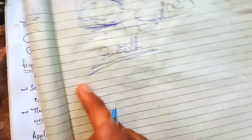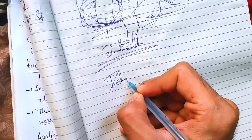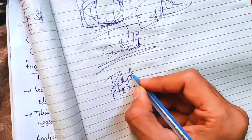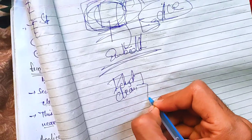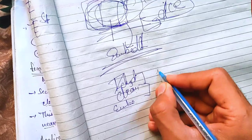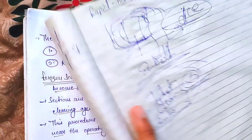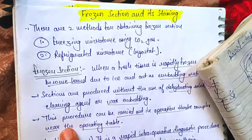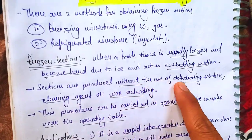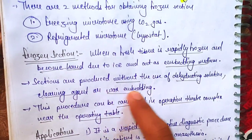Since the tissue is frozen and hardened by ice, we do not need dehydration, clearing, or wax embedding. These three processes are eliminated. The sections are produced without the use of dehydrating solution, clearing agent, or wax embedding.